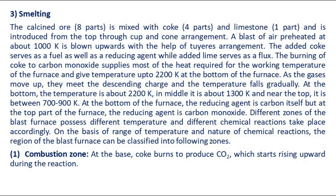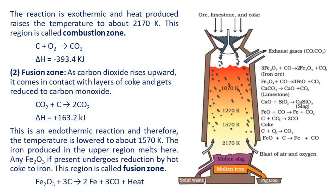Combustion zone: At the base, coke burns to produce carbon dioxide, which starts rising upward. The reaction is exothermic and heat produced raises the temperature to about 2170 Kelvin. This region is called the combustion zone. Fusion zone: As carbon dioxide rises upward, it comes in contact with layers of coke and gets reduced to carbon monoxide. This is an endothermic reaction and therefore the temperature is lowered to about 1570 Kelvin. The iron produced in the upper region melts here. Any ferric oxide if present undergoes reduction by hot coke to iron.